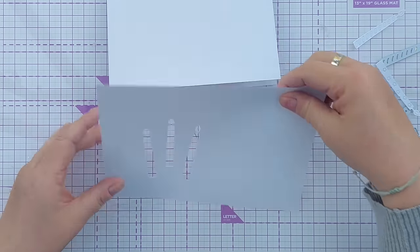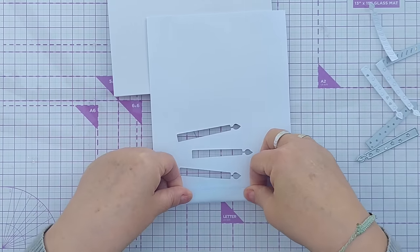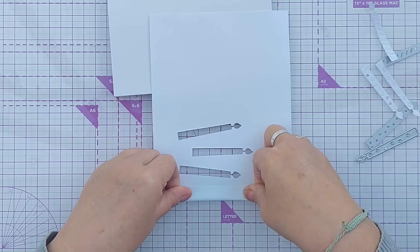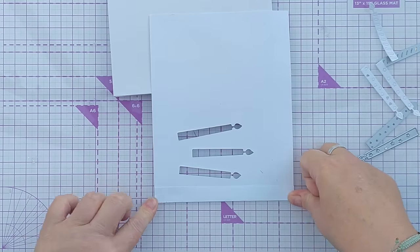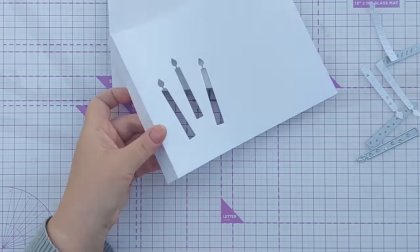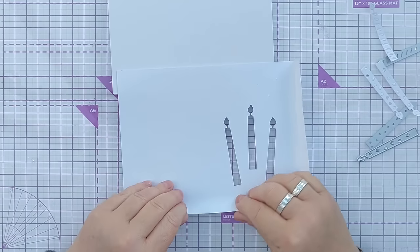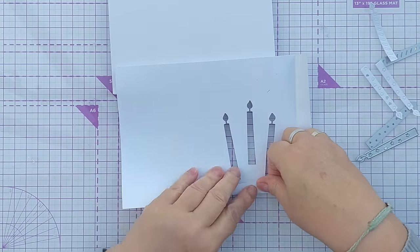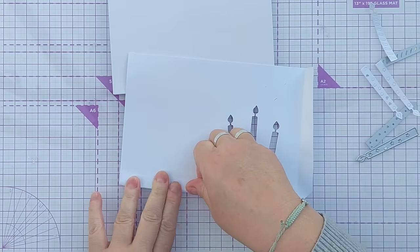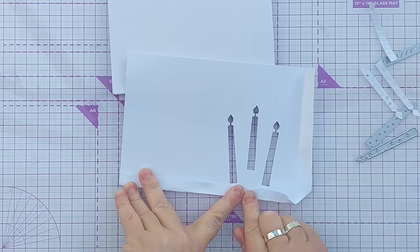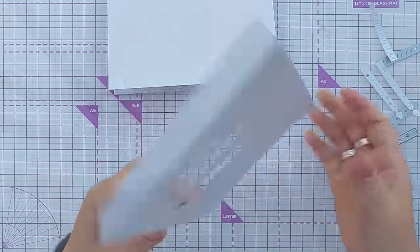So the stencil is cut. What I'm going to do now, and this is just because my stencil isn't see-through, I'm going to fold and slip along these lines here like this. This will all make sense in a minute.